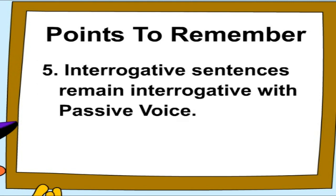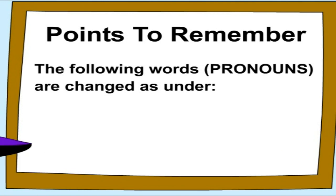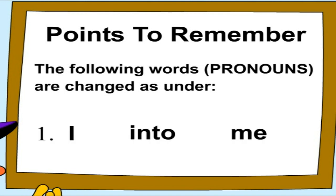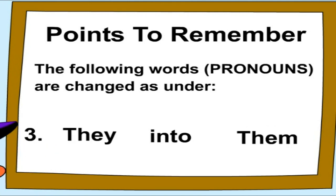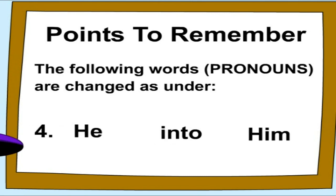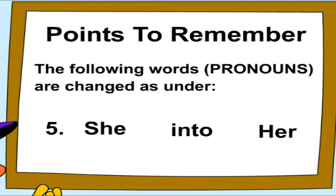Five, interrogative sentences remain interrogative in passive voice. The following pronouns are changed as follows: 'I' into 'me', 'we' into 'us', 'they' into 'them', 'he' into 'him', 'she' into 'her'.